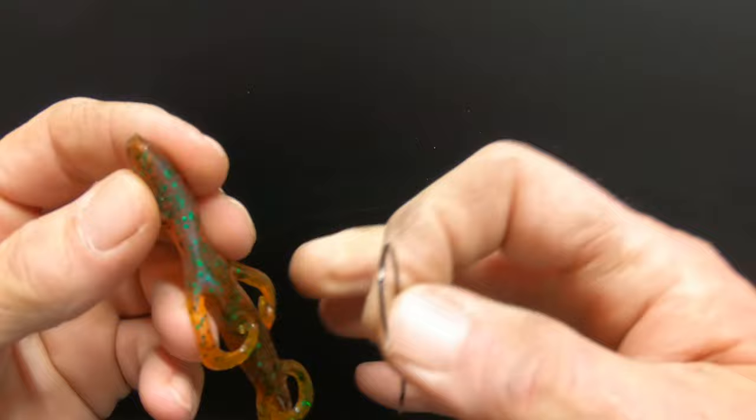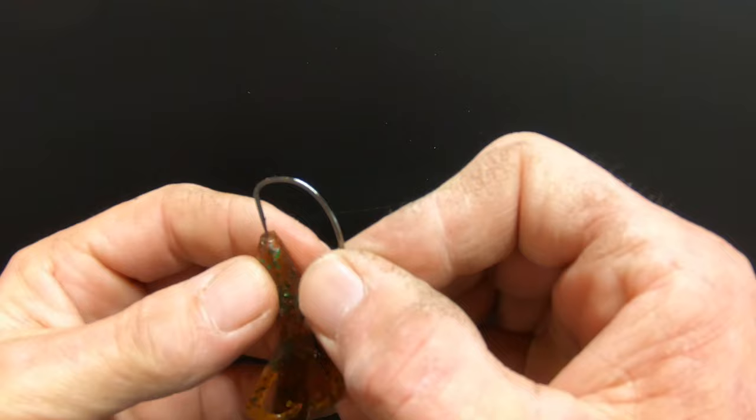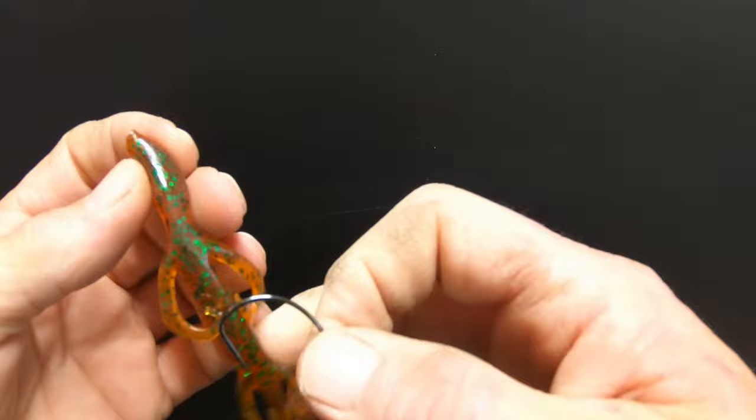Now, you're going to take a 3-aught or 4-aught hook. I've got a 5-aught, so it'll show bigger. This is the 6-inch gourd lizard. You want to do about a quarter of an inch. Now, notice you've got a flat side and a round side.